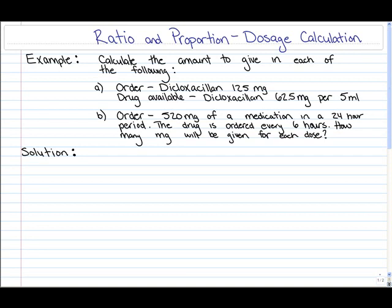Now in this example we're to calculate the amount to give in each of the following. For part A, the order is dicloxacillin 125 milligrams, but the drug available is dicloxacillin 62.5 milligrams per 5 milliliters. In part B, the order is 520 milligrams of a medication in a 24-hour period. The drug is ordered every six hours, so how many milligrams will be given for each dose?